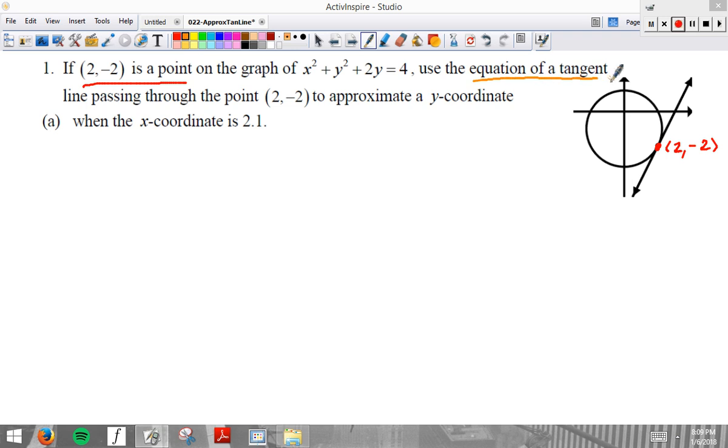So we need the equation of a tangent line. Whenever you see the words equation of a line, you should be thinking point, slope. Oh, wouldn't you know it? We have a point. Check. 2 comma negative 2. Now we need to get a slope.